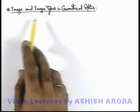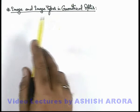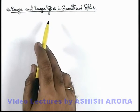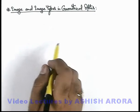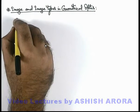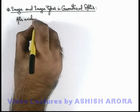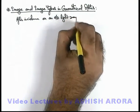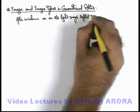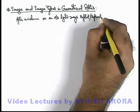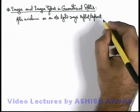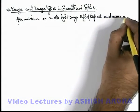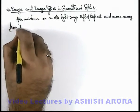Now we'll study about image and image types in geometrical optics. Whenever light rays are incident on an optical device, the optical device will either reflect or refract the rays, which then move away from the device.